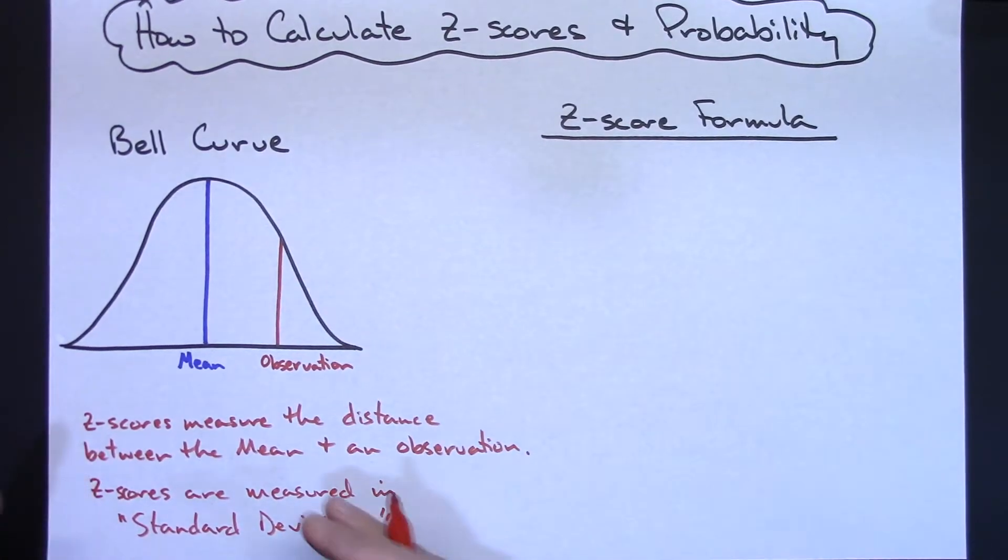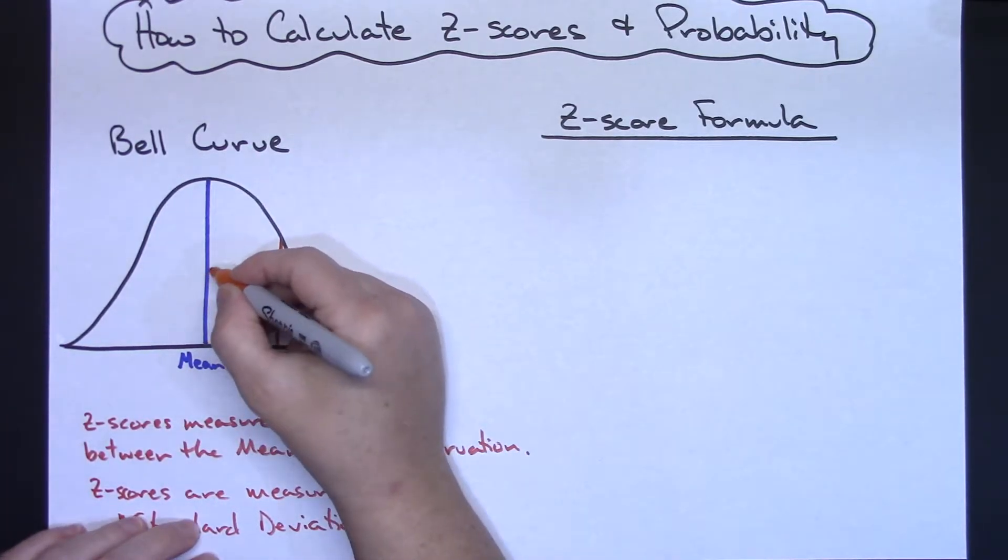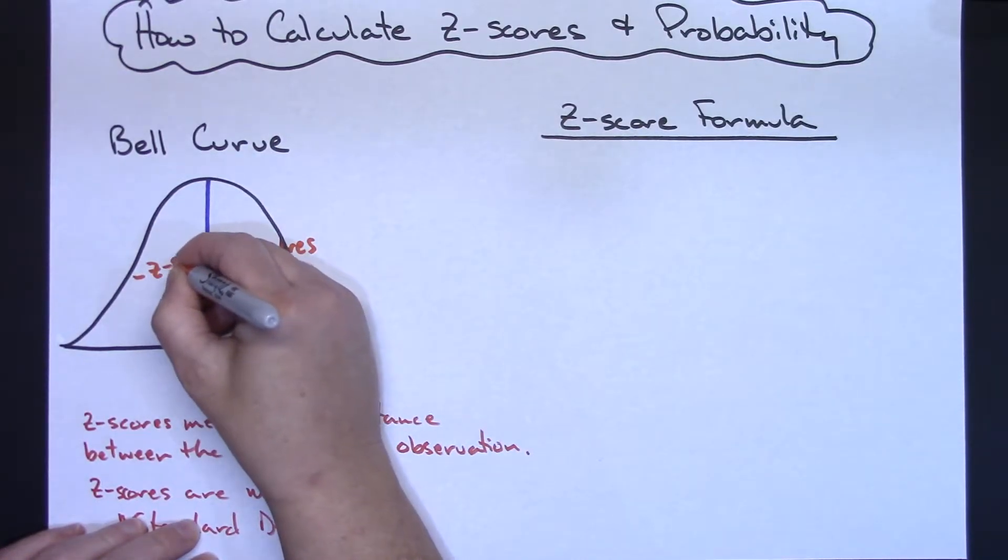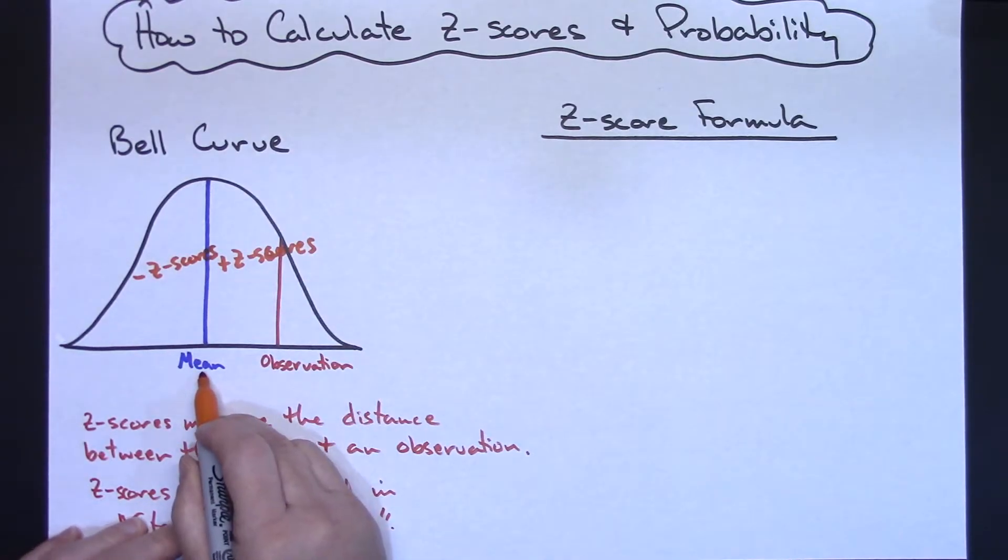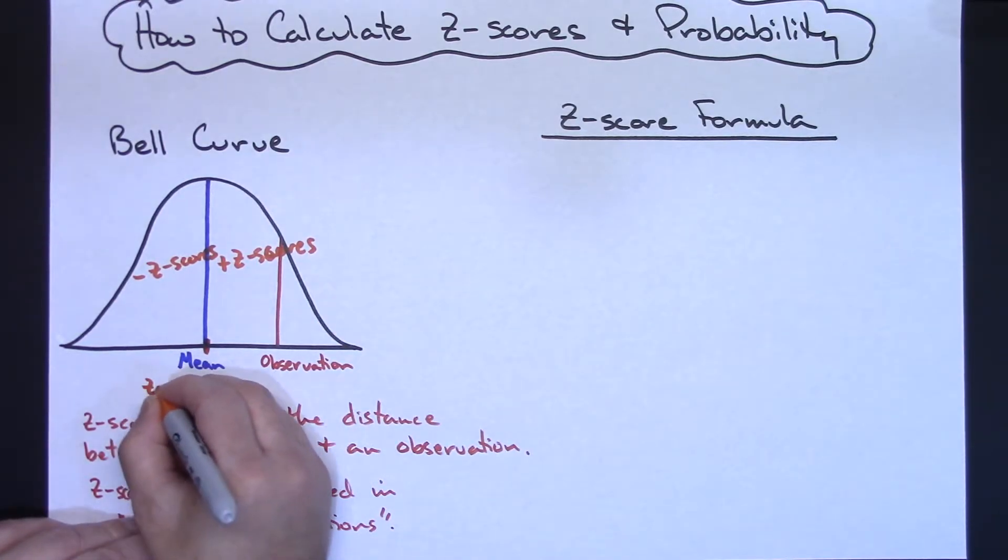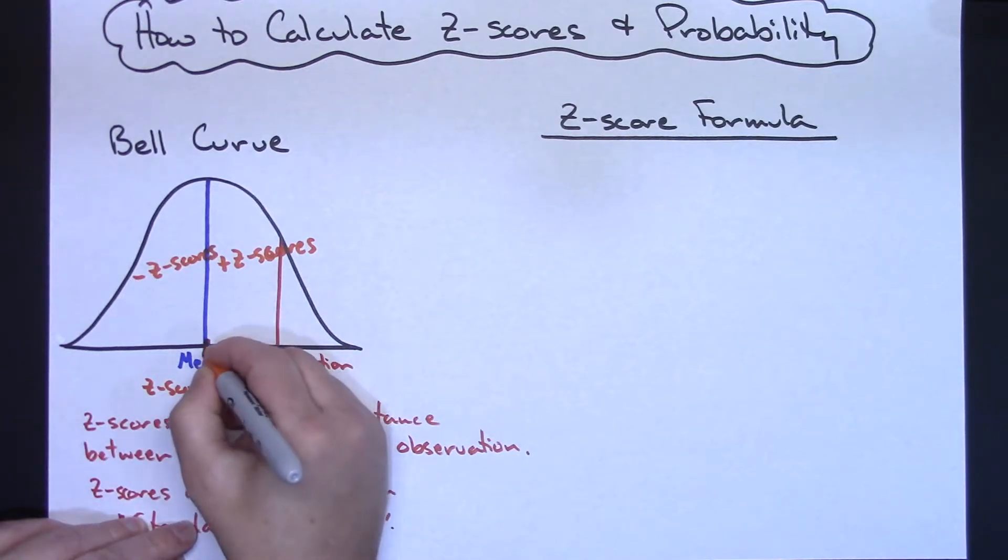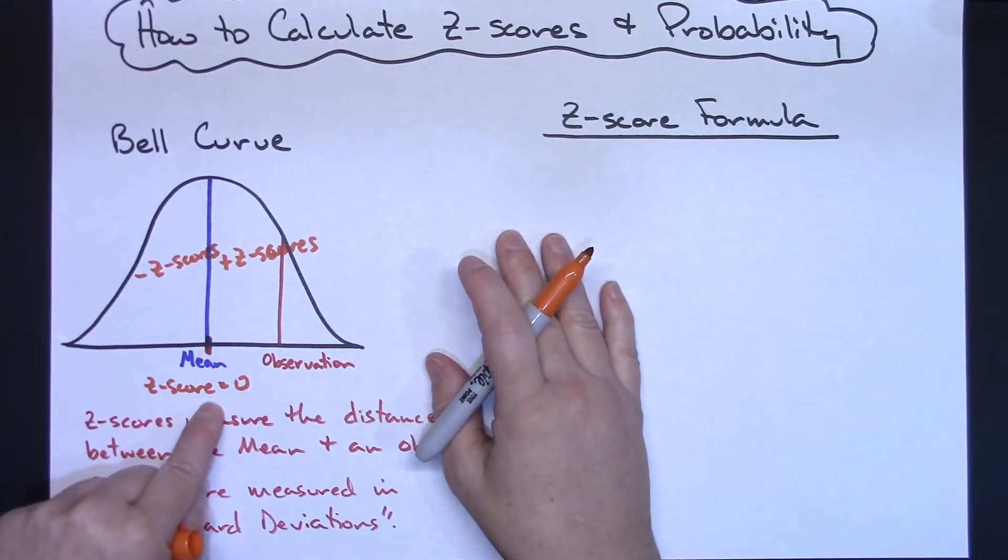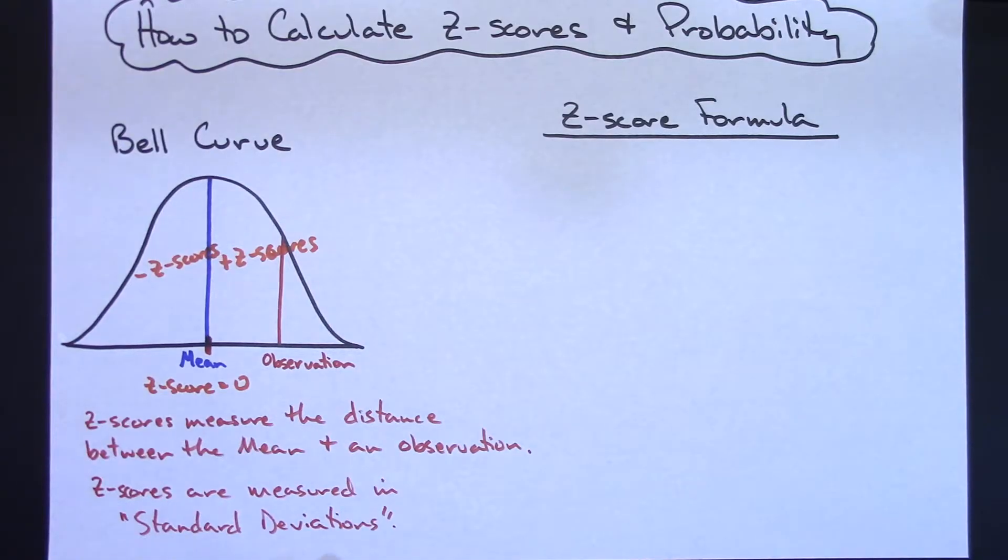So keeping that as my definition here, then I could label my diagram as saying anything to the right here would be my positive z-scores. Anything to the left here would be my negative z-scores. And right there at the mean, I have a z-score that is 0. So I've got positive z-scores over here, negative z-scores to the left of the mean. At the mean, my z-score is always 0. So that kind of gives you an idea of what a z-score is. It's measuring that distance between the mean and an observation, and we measure a z-score in standard deviations.